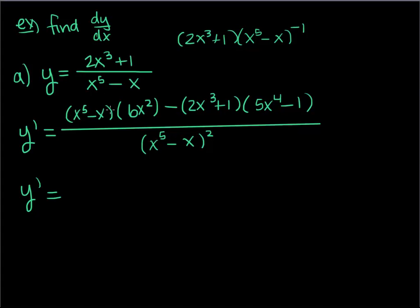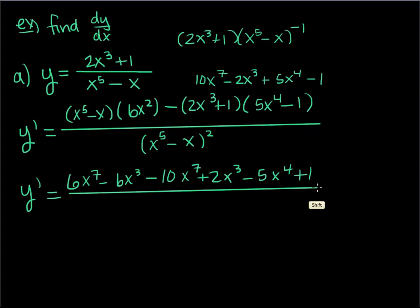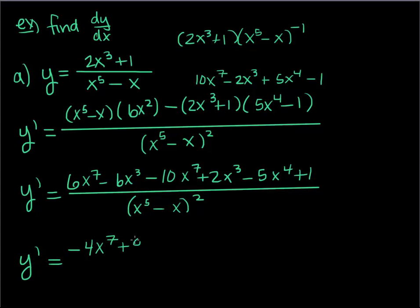Now simplifying: I take 6x squared through the denominator to get 6x to the 7th minus 6x cubed. Then I multiply out 2x cubed plus 1 times 5x to the 4th minus 1, getting 10x to the 7th minus 2x cubed plus 5x to the 4th minus 1. I want to expand this first before distributing the negative, so that negative goes through every single term. The denominator stays as x to the 5th minus x quantity squared — don't foil the denominator, as we may want to know where the derivative is undefined.